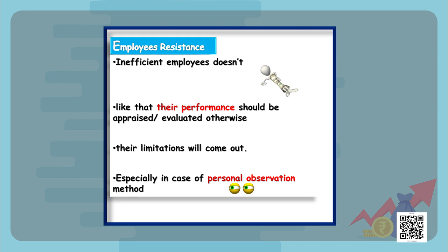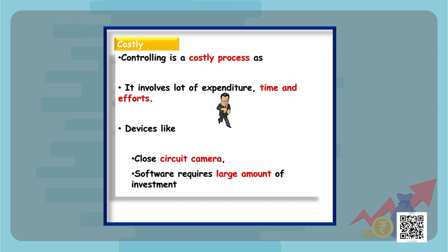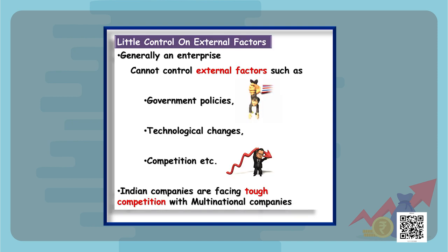The second limitation is employee resistance — inefficient employees sometimes avoid being judged by a supervisor on these standards because they feel they might be underperforming and could be removed from the organization. The next limitation is that controlling is a costly process, as devices like CCTVs or software require huge investment. Finally, there is little control over external factors — government policies, technological changes, or increase in competition cannot be controlled by the organization.